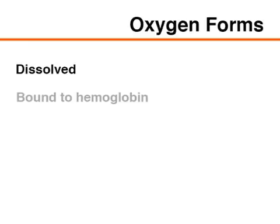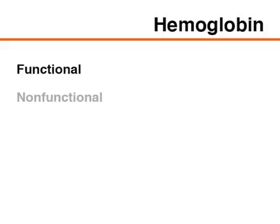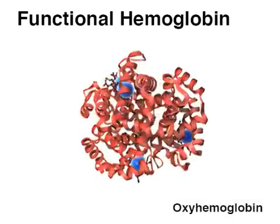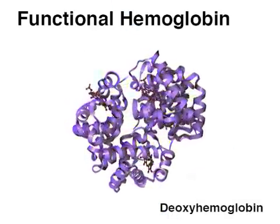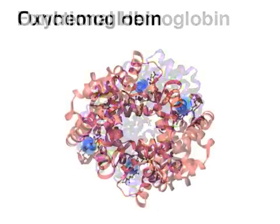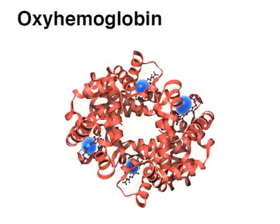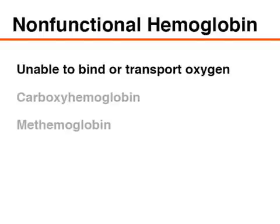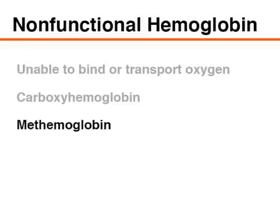Oxygen is present in two forms in the blood: dissolved and bound to hemoglobin. Hemoglobin can be functional or non-functional in terms of oxygen binding and transport. Functional hemoglobin binds and transports oxygen and is present as oxyhemoglobin and deoxyhemoglobin. Oxyhemoglobin contains bound oxygen, and deoxyhemoglobin is reduced hemoglobin without bound oxygen. Non-functional hemoglobin is unable to bind or transport oxygen and is present as carboxyhemoglobin and methemoglobin.